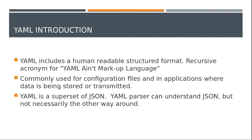When you consider configuration files or transmission files, they will normally be in XML, JSON, or YAML format. XML has more tags so it is not lightweight. JSON does not have tags but has key-value pairs and braces. Whereas in YAML we don't have anything — only indentation and hyphens. We don't even have double quotes for values. And a YAML parser can understand JSON because YAML is a superset of JSON, but not the other way around.